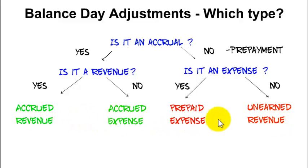You've got four different types of balance day adjustment: the two accruals and the two prepayments. And with each one of these balance day adjustments is a general journal entry, which I've talked about in another tutorial.